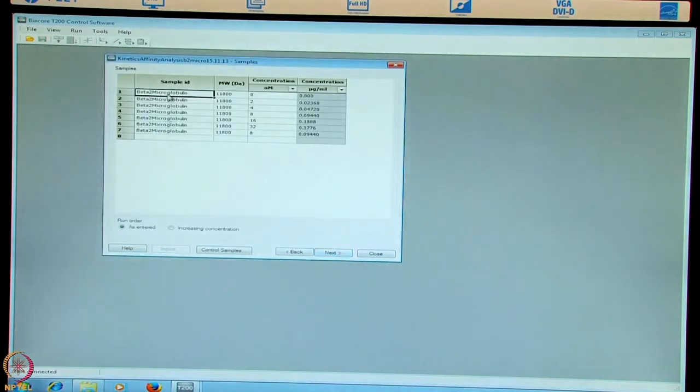And fill in the name of the sample as beta-2 microglobulin with a molecular weight of 11800. And concentration with 0, 2, 4, 8, 16, 32 and the repeat of 8 nanomolar again.